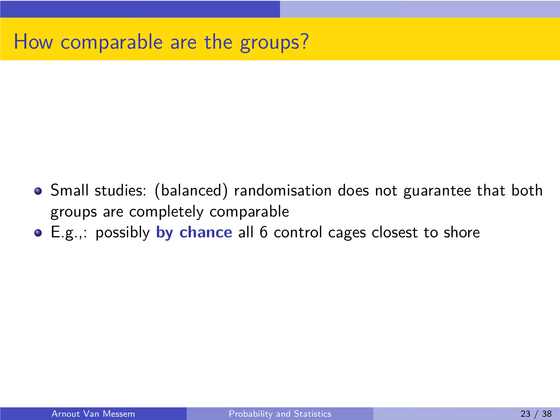However, even with balanced randomization, we can still get that all the control cages are closest to shore, especially in small studies. And this is something we want to avoid because being them closest to shore might have an influence on our result. What you are not allowed to do is to continue shuffling the cages until the distribution seems okay. In that case the distribution is no longer random, but it's subjective to the researcher's wishes.